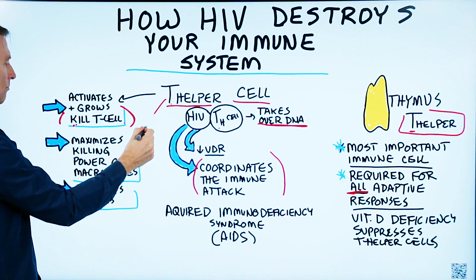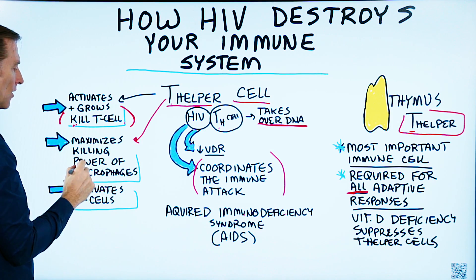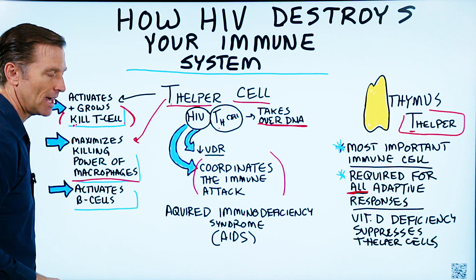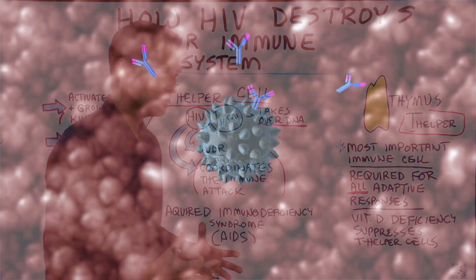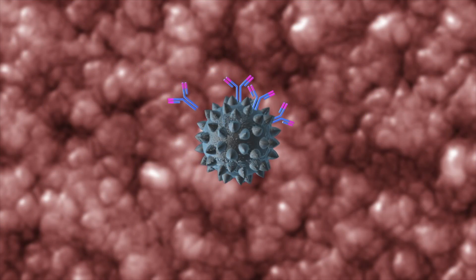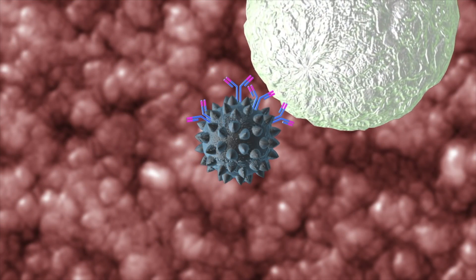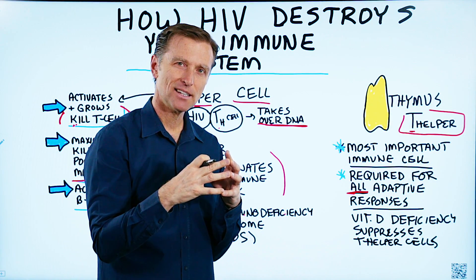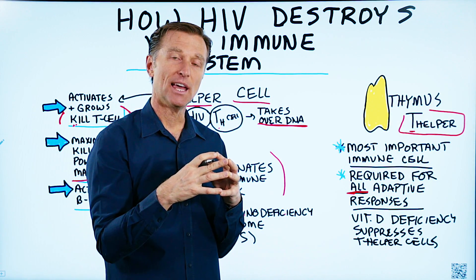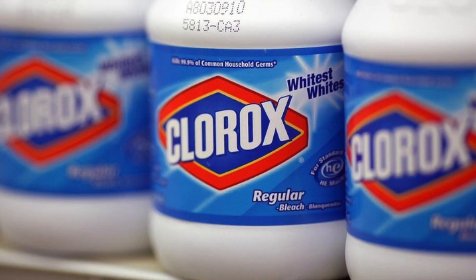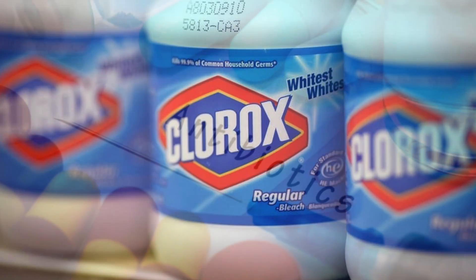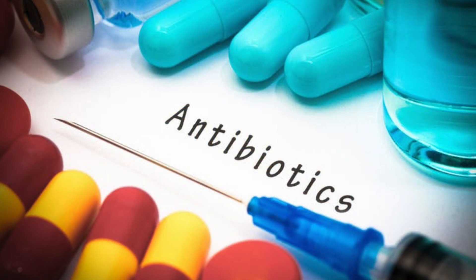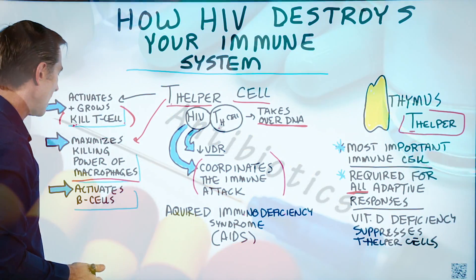The T helper cell also maximizes the killing power of the macrophages. Macrophages are cells that eat viruses and bacteria — they're very large, putting pathogens into a sack of acid, enzymes, and other chemicals to kill them. This includes hydrogen peroxide, the main ingredient in bleach, as well as antibiotics and other enzymes. It's quite an interesting weapon.